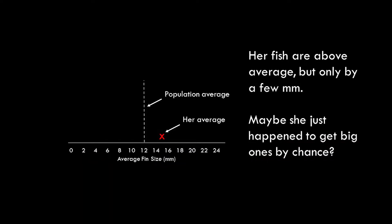Remember, we know that there is error in our measurement. Our measurement is not going to be exact because we're sampling — mostly this is coming from the fact that there are individual differences between betas, and there are different fish in our sample. So if we look at her fish compared to the average of 12 millimeters, her sample of fish has 15 millimeter tails. That's a little bit bigger, but should we be convinced by this? Maybe it's important to know how much variability there is in wild fish, because it's possible that she just happened to get a bunch of big-tailed betas just by chance.